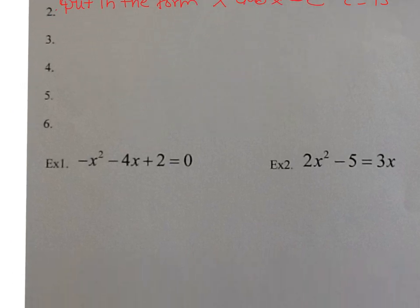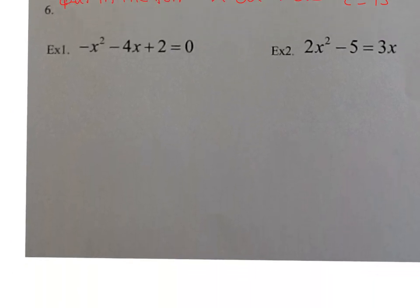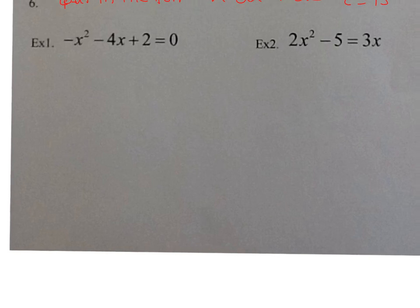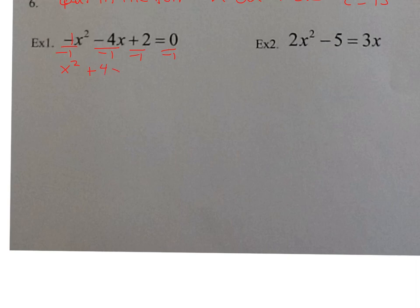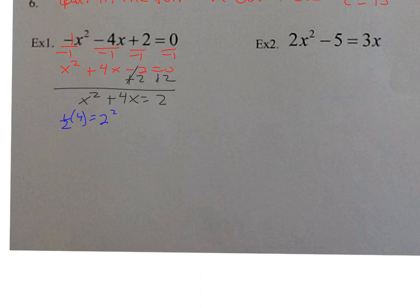Let's look at the first completing-the-square example: negative x squared minus 4x plus 2 equals 0. There's a negative 1 in front — it has to be positive 1, so I divide everything by negative 1. I get x squared plus 4x minus 2 equals 0. Now I move the 2 to the right by adding 2, so I get x squared plus 4x equals positive 2. Now I do half of b: half of 4 is 2, squared is 4. I add 4 to both sides and get x squared plus 4x plus 4 equals 6.